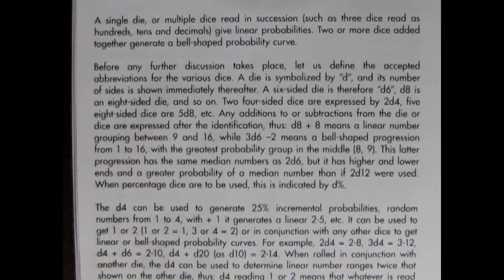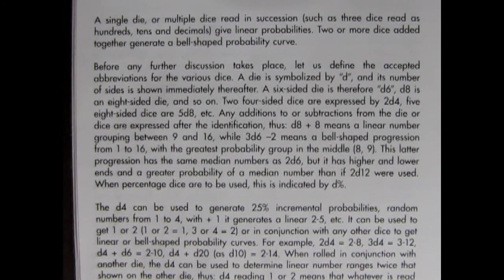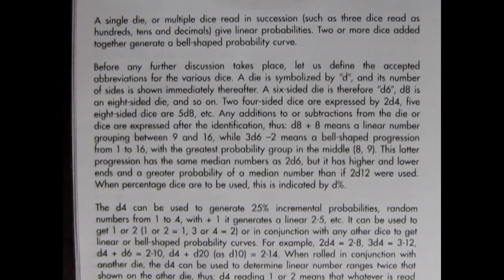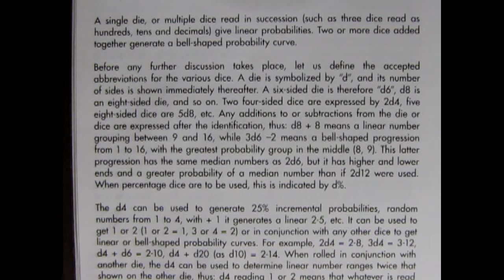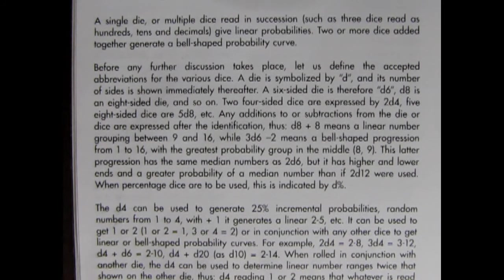A single die or multiple dice read in succession such as three dice read as hundreds, tens, and decimals give linear probabilities. Two or more dice added together generate a bell-shaped probability curve. So if you roll three dice and say the first one is hundreds, the second is tens, and the third is decimals, that's linear. Two or more dice added together making seven would generate a bell-shaped probability curve.